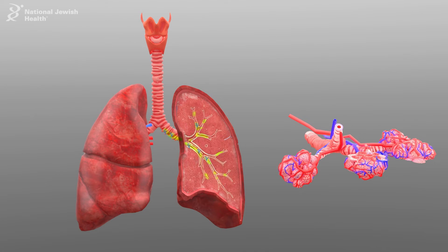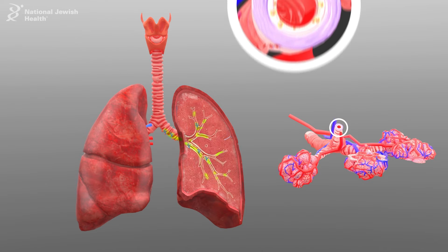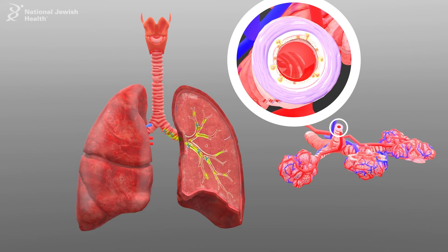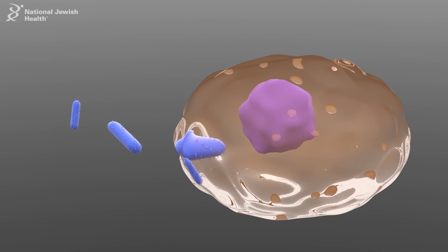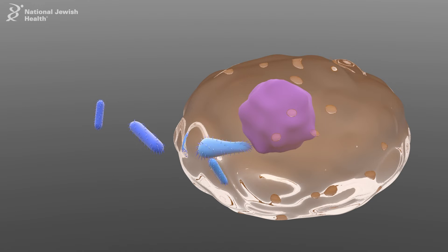Once introduced into the tracheobronchial tree in the appropriate setting, NTM create biofilms and survive in macrophages where they evade host immune defenses. This intracellular compartment is an important target for drug therapy.